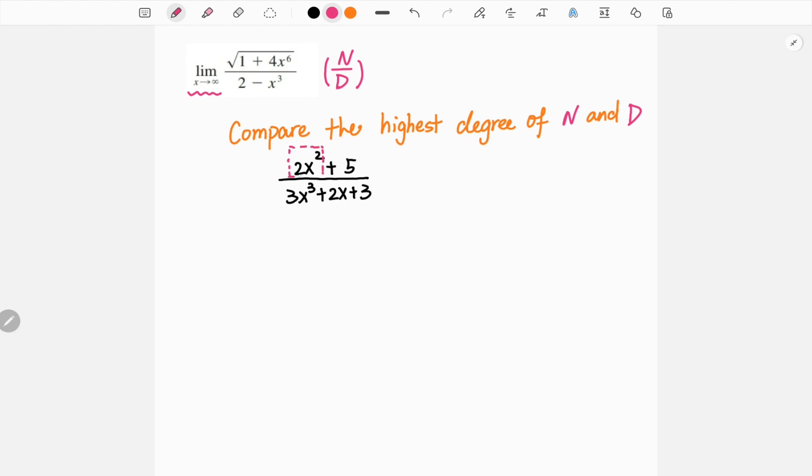The highest degree means we only want to look at the term that has the highest power. In this case, for our numerator it's 2x², for our denominator it's our first term 3x³. And then we further simplify this, and that's gonna give us 2 over 3x.